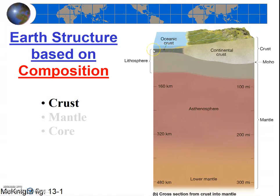The oceanic crust is only about five miles thick, which is very thin compared to the 7,900 mile diameter of the earth. This basalt contains a lot of iron and it's quite dense, roughly about 3 grams per centimeter cubed.